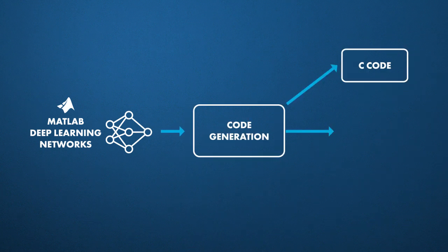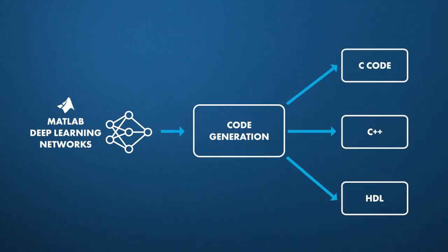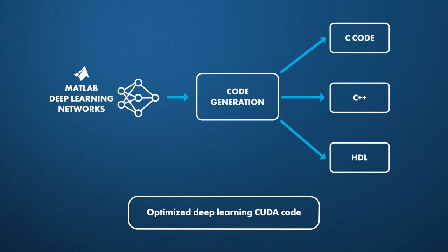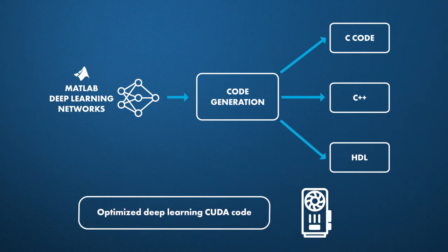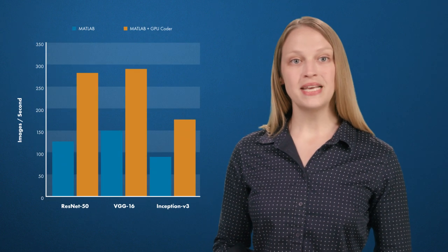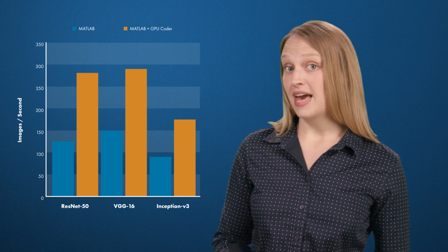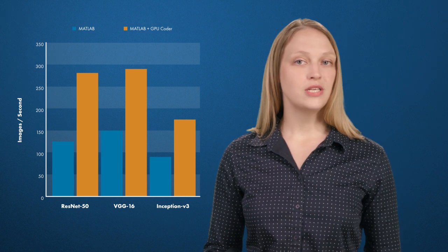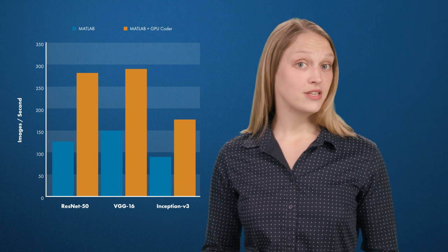In addition to C, C++, and HDL, MATLAB creates optimized deep learning CUDA code for NVIDIA GPUs, including the pre-processing and post-processing code required to run the entire algorithm. Optimized CUDA with TensorRT makes inference very fast, and the code can be deployed to embedded NVIDIA GPUs.